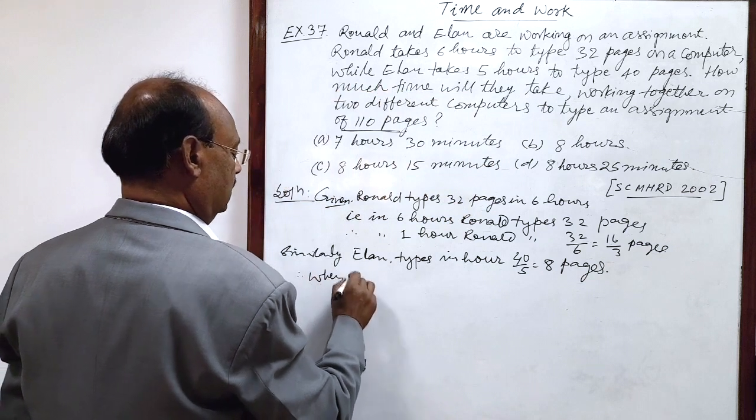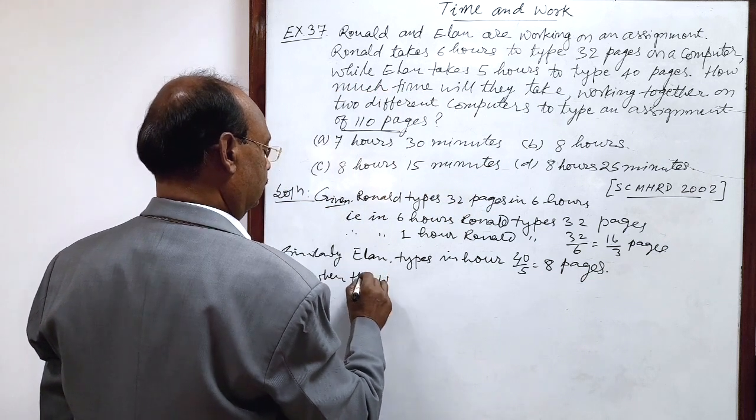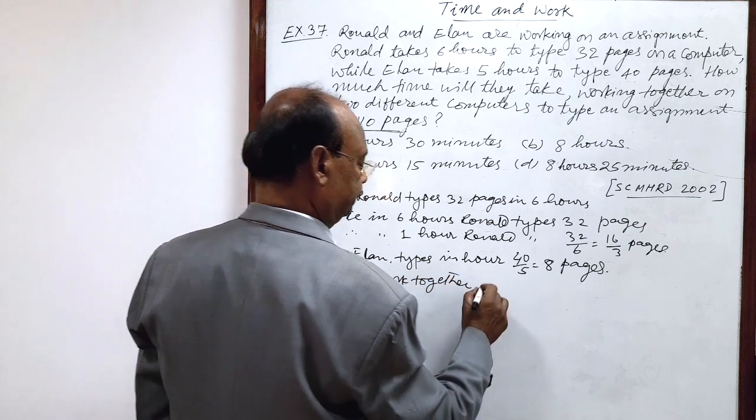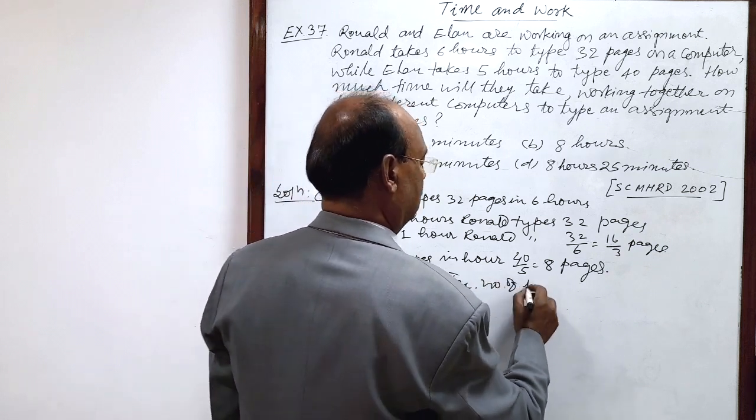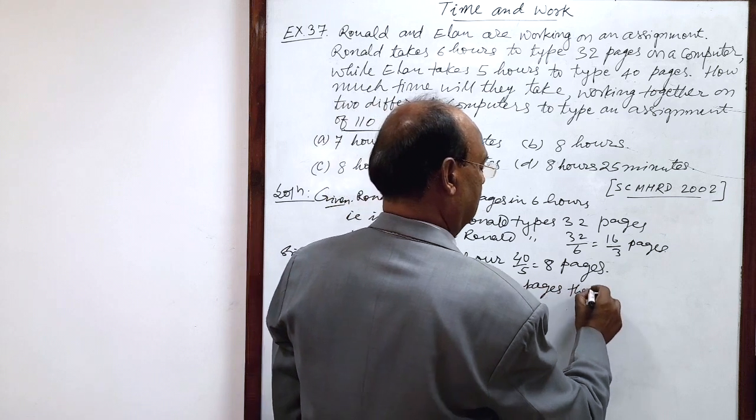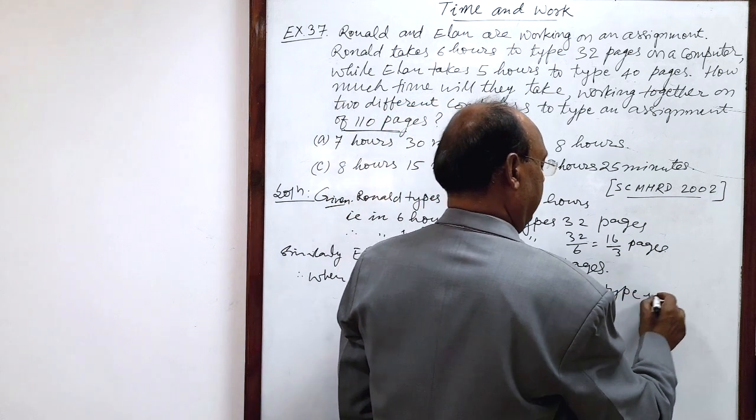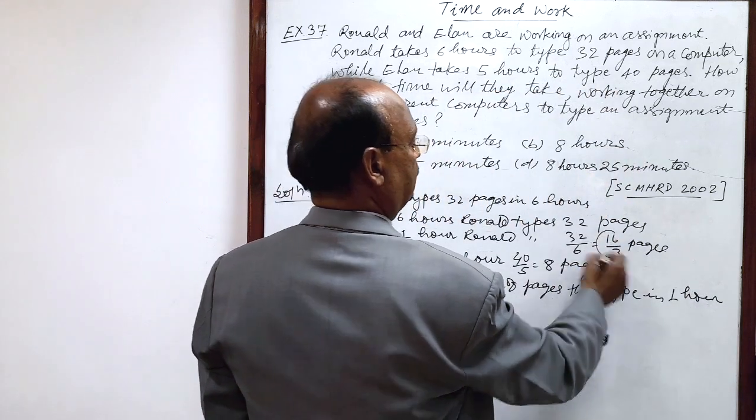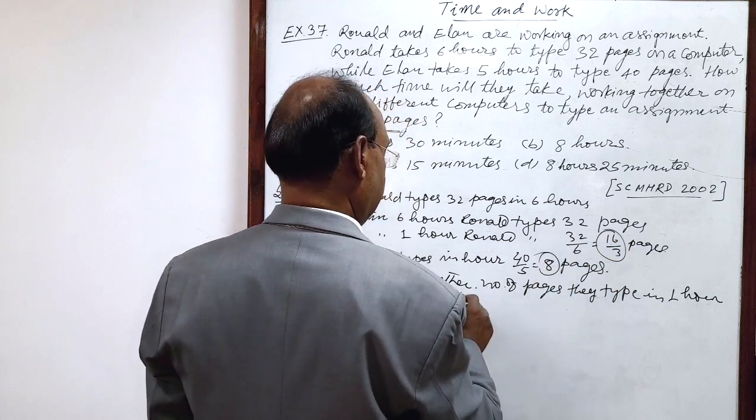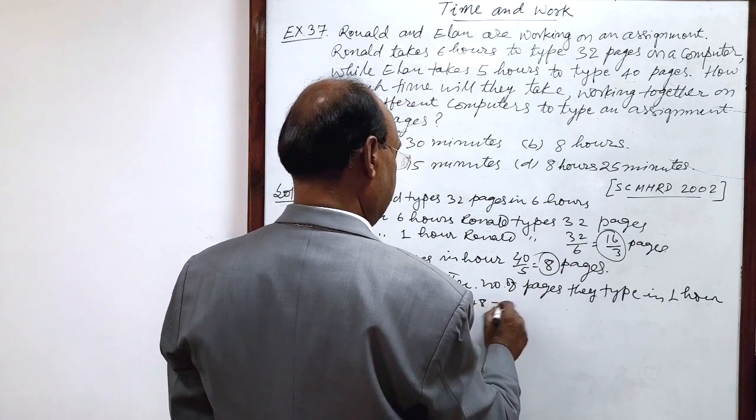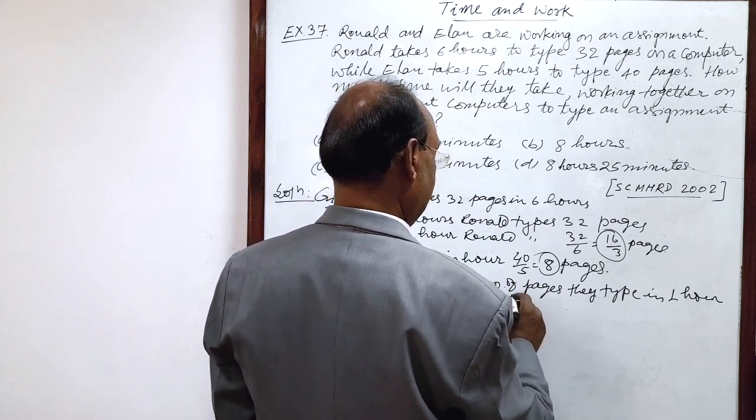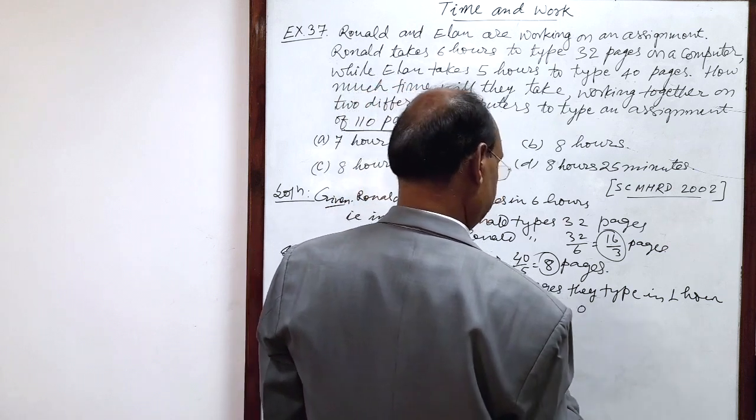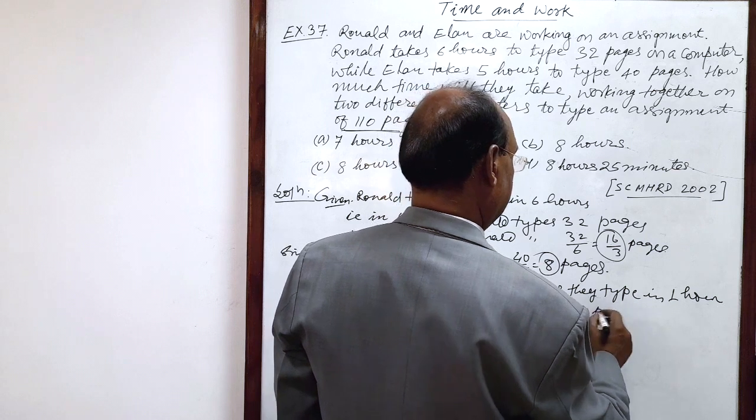Therefore, when they work together, number of pages they type in one hour, sum of these two numbers, 16 by 3 plus 8. So, this is 16 by 3 plus 8 is equal to, LCM is 3, 16 plus 24, and this is equal to 40 by 3 pages.